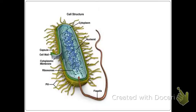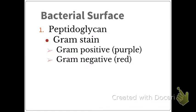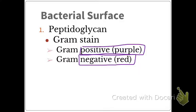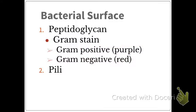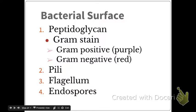Here's an example again of a prokaryotic bacterial cell. One thing that differentiates archaeobacteria from eubacteria is peptidoglycan. We can find out if our bacteria has it by doing a gram stain. If gram positive, it will be purple; if gram negative, it will be red. We'll try to identify gram positive or gram negative in our bacteria lab. Other features on the bacterial surface include pili, flagellum, and endospores — these also help differentiate archaeobacteria from eubacteria.